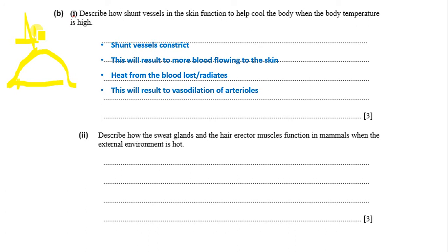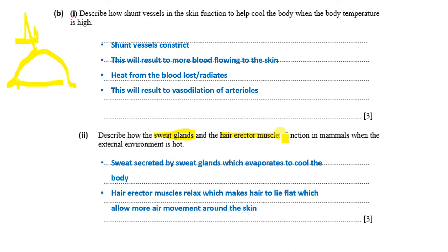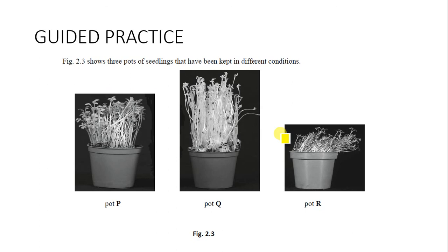Describe how sweat glands and hair erector muscles function in mammals when the external environment is hot. The sweat glands produce sweat, which evaporates to cool the body. The hair erector muscles relax, making the hair lie flat, which allows air movement around the skin. Sweat secreted by sweat glands evaporates to cool the body, and hair erector muscles relax so hair lies flat, allowing air to circulate.